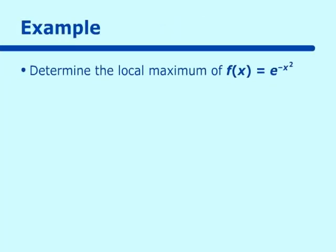Let's do an example of the first derivative test. Determine the local maximum of f(x) = e to the negative x squared. To determine this maximum we first have to find the critical point, and to do that we have to take the first derivative. So f prime of x equals negative 2x times e to the negative x squared. Setting f prime equal to zero, e to the negative x squared can never equal zero, but x can equal zero. So our critical point is when x equals zero.